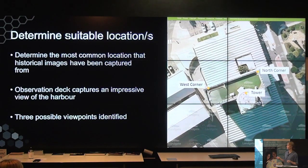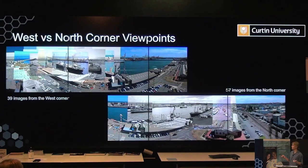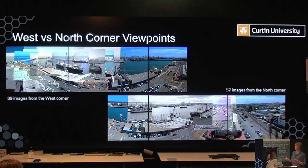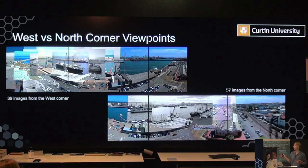Using those three possible viewpoints we had to determine the most suitable for creating this panorama. By overlaying historical images onto both the west corner and north corner panoramas, we identified 39 images taken from the west corner and 57 images taken from the north corner. This showed that most photographers were using the north corner, which is far more expansive and offers a greater opportunity for capturing activity at the port.